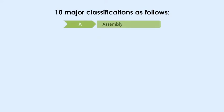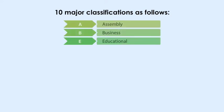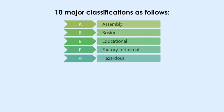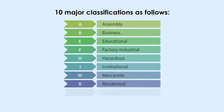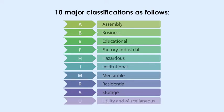The 10 major occupancy classifications are: A — Assembly; B — Business; E — Educational; F — Factory Industrial; H — Hazardous; I — Institutional; M — Mercantile; R — Residential; S — Storage; U — Utility and Miscellaneous.